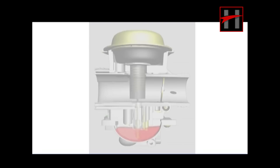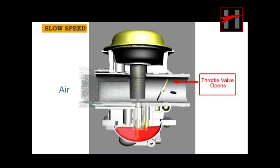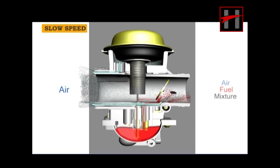As the throttle valve opens, the air-fuel mixture is fed into the engine mainly through the pilot outlet and the pilot bypass, and is supplemented by the main circuit.